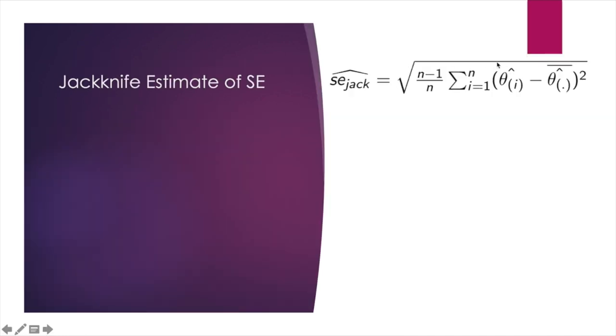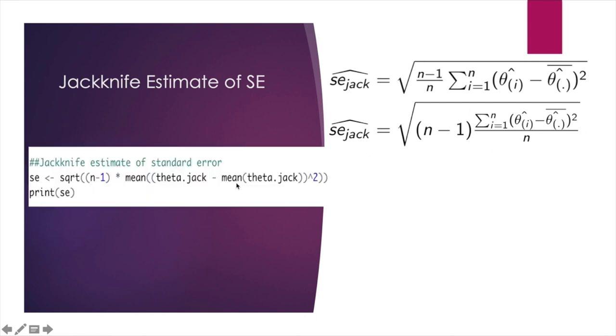After rewriting the formula into this format, we can see this part is the mean of the square difference. So in our R code, we have two means. This inner mean is for this part, which is the mean of estimates from the Jackknife samples. And this mean is for the sum divided by n. Since we have left one element out, naturally here is n minus 1. So after we execute our code, we have the output which prints out 0.1055.